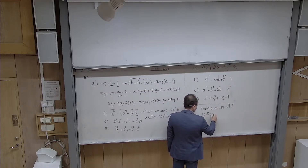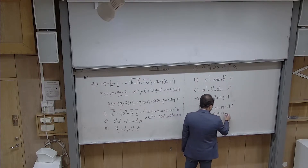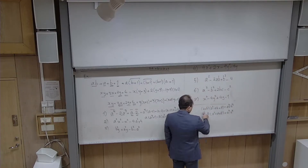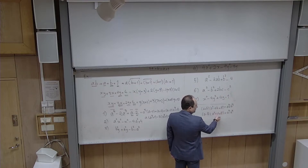For the sum of two squares, I told you it is not factorizable over the real numbers — if you see x² + y², just leave it. But for third powers, both the sum and difference of cubes are factorizable.